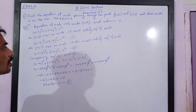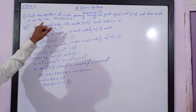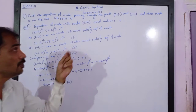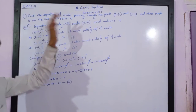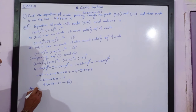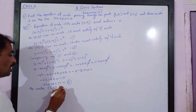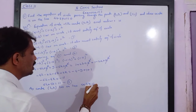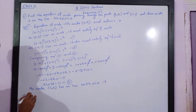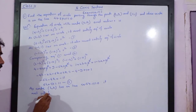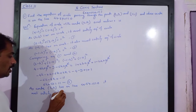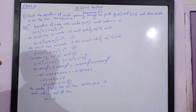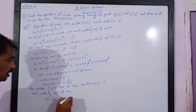Now, we are given that the center of the circle lies on the line 4x minus 3y minus 11 equals 0. We have assumed the center is (h, k), so it must satisfy the equation of the line as well. Substituting, we get: 4h minus 3k equals 11. This is Equation 4.